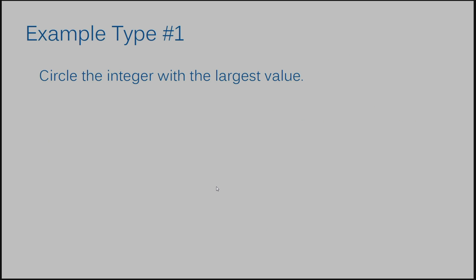So let me move into some examples so we can make sure we understand which numbers are larger and which are smaller when we're dealing with integers. For the first type of example, we're going to circle the integer with the largest value. For example number one, we have 56 and 59. These are pretty easy — they're still integers because remember, integers are the counting numbers. This one's easier because we don't have any negative numbers to deal with. So if I'm going to circle the larger number, the number with the largest value, that'd be 59.